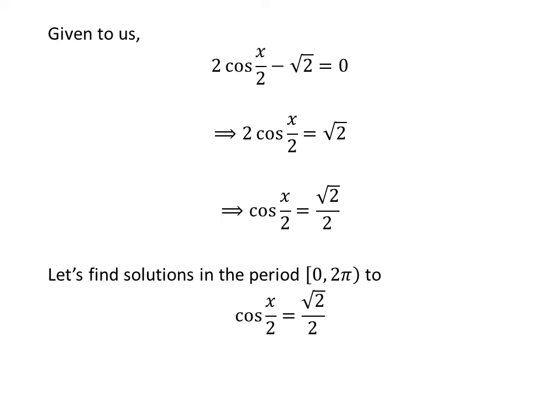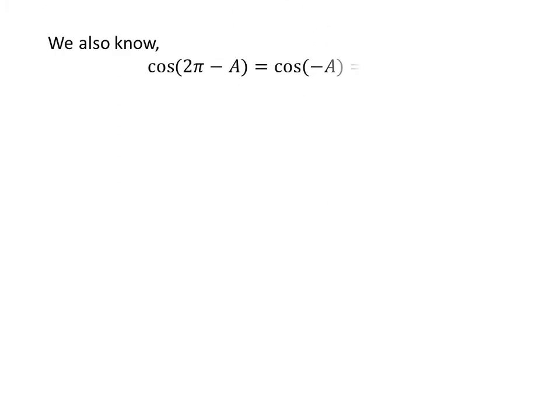Let us find the solutions to the equation cosine of x upon 2 is equal to square root of 2 upon 2. We know the value of cosine of pi upon 4 is square root of 2 upon 2. We also know the value of cosine of x repeats after the interval of 2 times pi. So, cosine of 2 times pi minus a is equal to cosine of minus a.